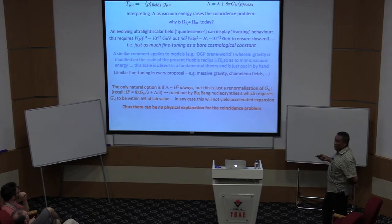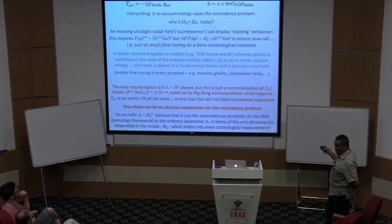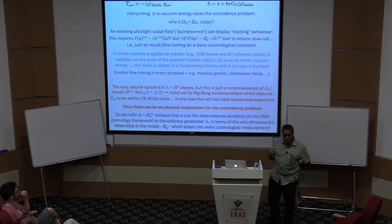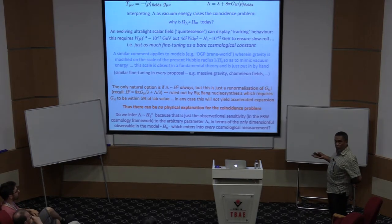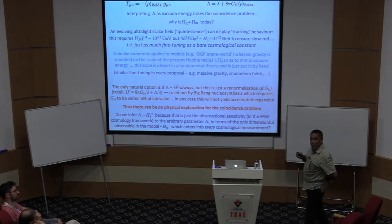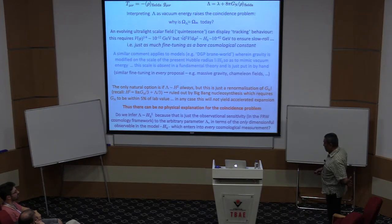One is inclined to wonder if lambda might be of order H₀² simply because that is just the observational sensitivity we have. There is some arbitrary parameter lambda. We determine it by fitting the model to data. The model has only one dimensional parameter H₀, and by the sum rule, the only value lambda can pick up is of order H₀². It could be zero — if you made very precise measurements, we might deduce that lambda is actually zero. Our sensitivity is just of order H₀², plus or minus one. So it could be zero, it could be twice, but it is of that order. That is the thesis I'll extend later in the talk.